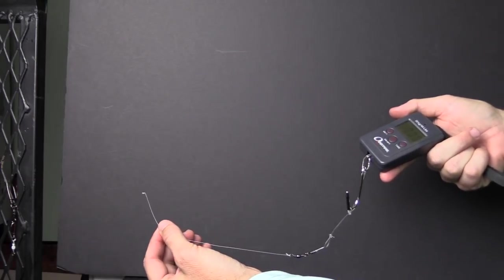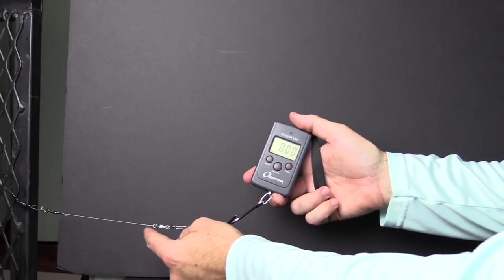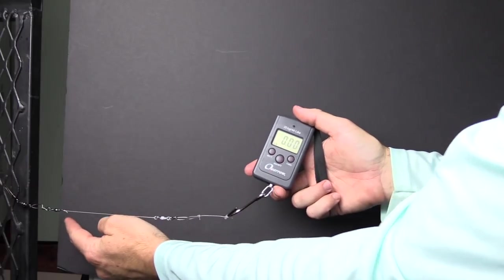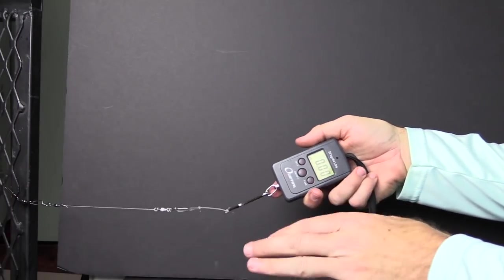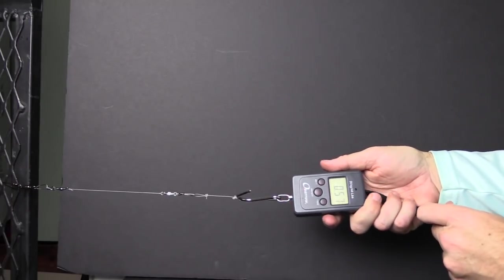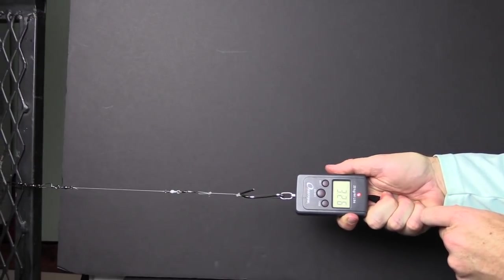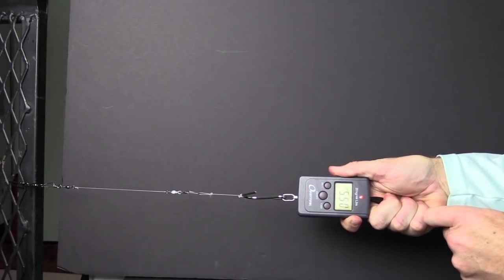We'll do that again. We have the clinch knot on this near side, uni knot far side. Both of them have five wraps so they have the same amount of wraps. I'll go slower this time in case it truly is that weak.